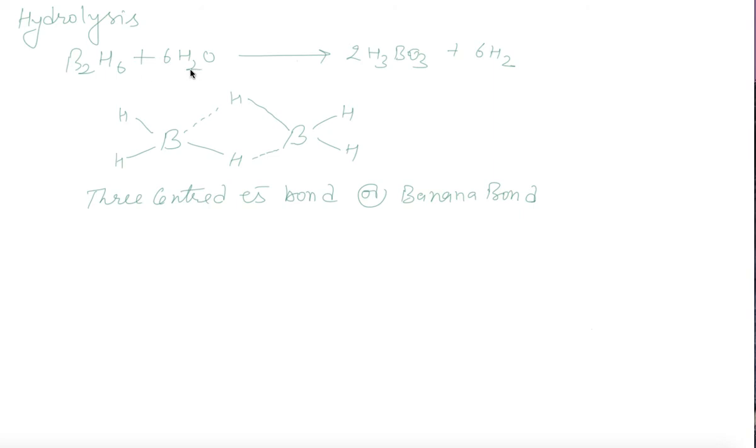B2H6 is representing in the dimeric form. It is 3-center-2-electron system, it is also called banana bond.